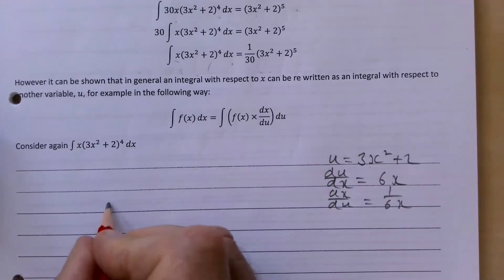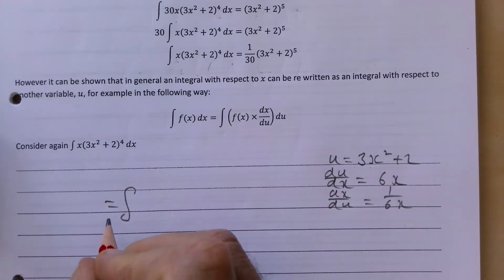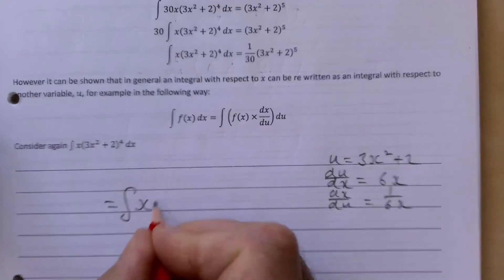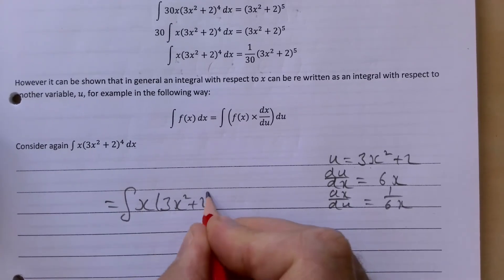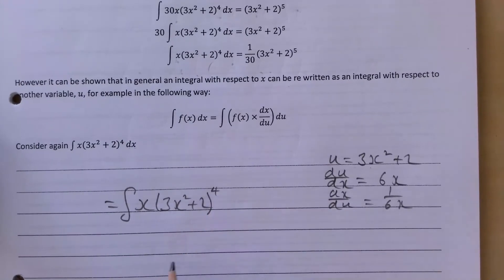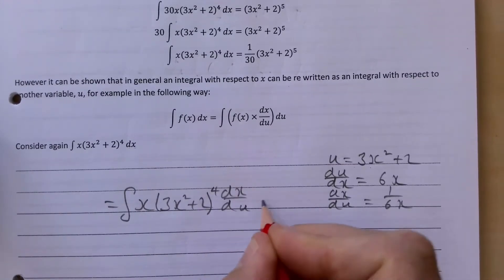If we start then to substitute what we need into this, we're going to get the integral of x/(3x² + 2)⁴ dx/du times du.